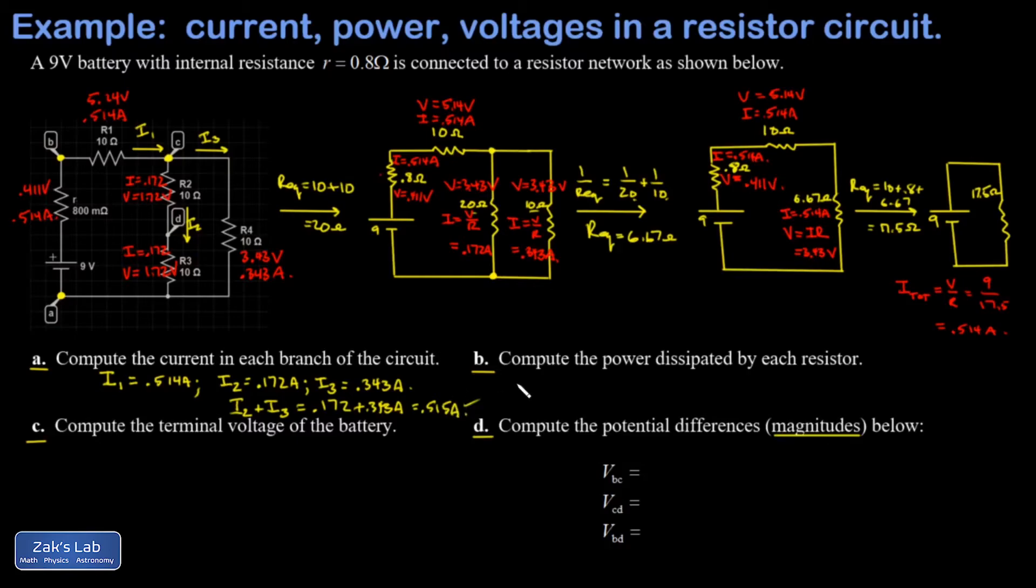In part B, we're asked for the power dissipated by each resistor. So let's start with the power dissipated by the internal resistance in the battery. I'll call that P little r. And I'm just going to be consistent and use the same formula on every one of these to make it quicker. I'm going to use I²R on every single one of them. This is going to be 0.514 squared times 0.8. And I get 0.211 watts.